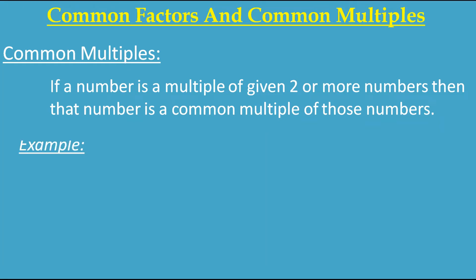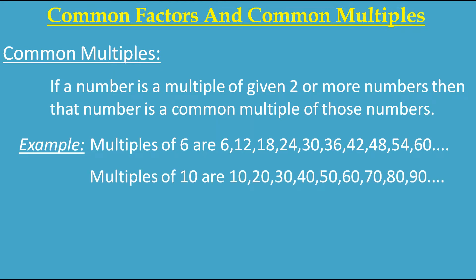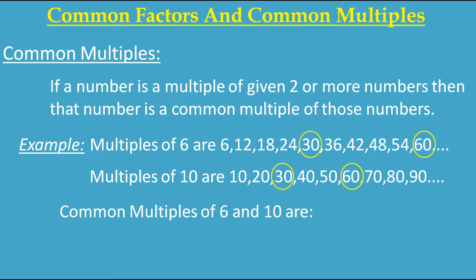Here I am taking the first 10 multiples of 6 and the first 9 multiples of 10. Now if you look carefully at these multiples, you will understand that 30 and 60 are common in both. So these numbers are called common multiples of 6 and 10. The common multiples of 6 and 10 are 30, 60, and so many more — if you find more multiples you will get more common multiples.